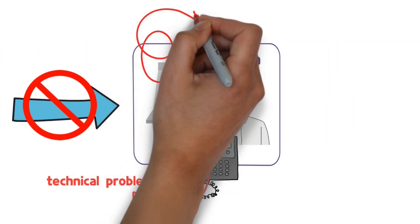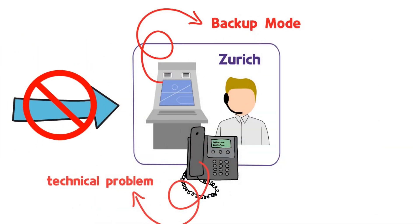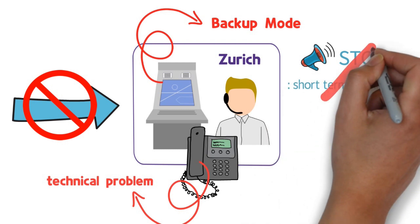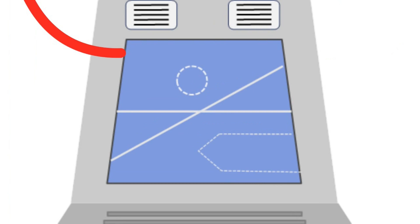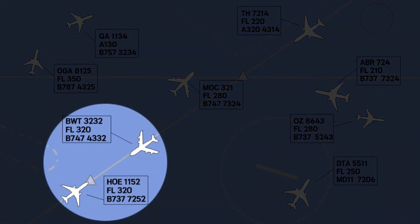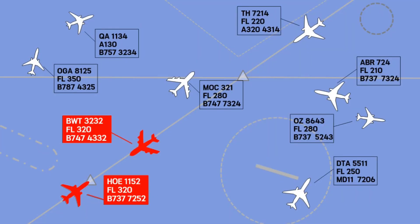Besides, that night, even the control radar system was in backup mode due to maintenance problems. Therefore, the ground-based radar alert system, STCA, short-term conflict alert, was not operated. This STCA is a device that generates visual and audible warnings when the threat of collision between aircraft is detected through the control radar.